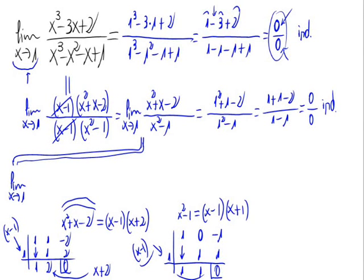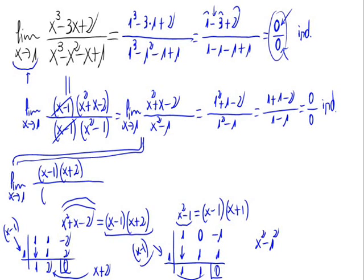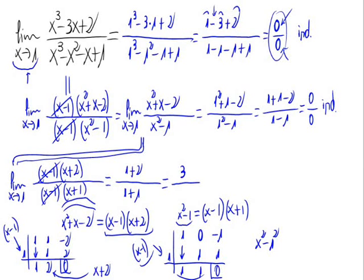So, writing the limit, we have on the numerator x minus 1 times x plus 2, and on the denominator x minus 1 times x plus 1. We can cancel x minus 1 on both numerator and denominator. Now substituting x equals 1, we obtain 1 plus 2 divided by 1 plus 1, which is 3 over 2. This is the answer for the given limit.